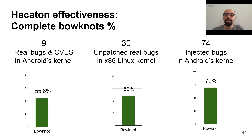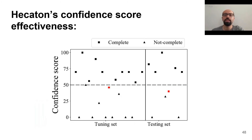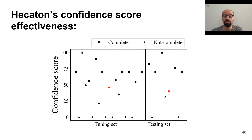As we can see, in most cases Hecaton could generate complete bonots. In other cases where it doesn't, on average we needed to manually add two to three statements to the bonots ourselves. We saw that Hecaton could not always generate complete bonots. However, our experiments on 30 real kernel bugs show that for all bugs where Hecaton reports a confidence score above 50, the bonots are complete. So researchers or analysts who want to work on these bugs can avoid incomplete bonots that require manual effort.